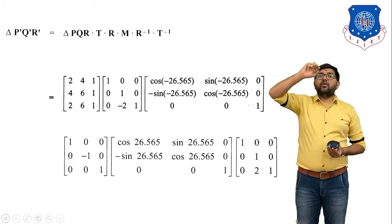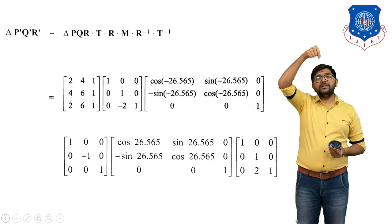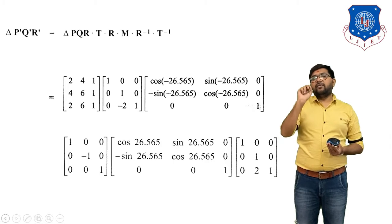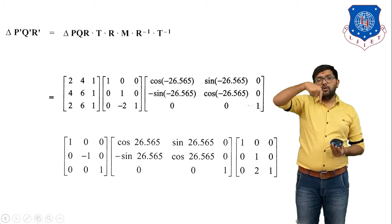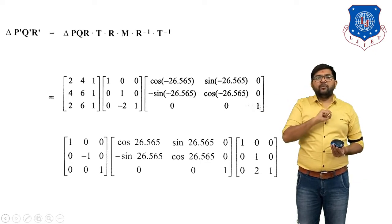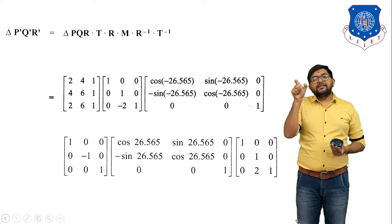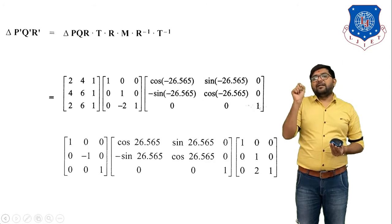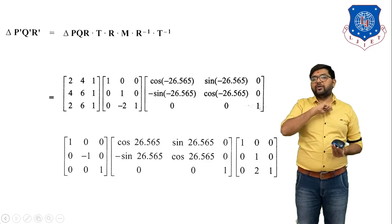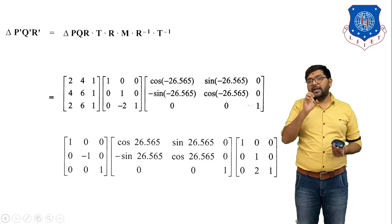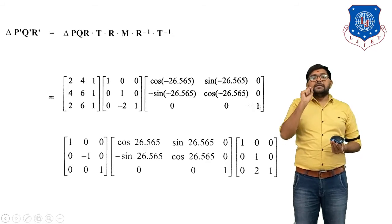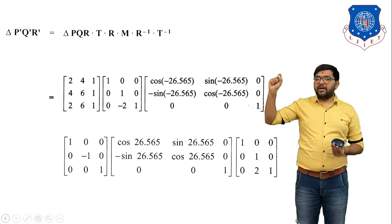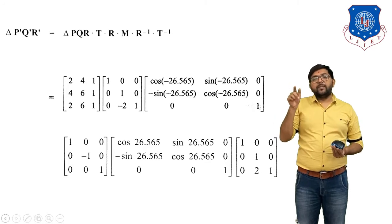For clockwise rotation, substitute −26.565° in place of θ: [cos(−26.565) −sin(−26.565) 0 / sin(−26.565) cos(−26.565) 0 / 0 0 1]. Next, M — the mirror about the x-axis matrix: [1 0 0 / 0 −1 0 / 0 0 1]. For anticlockwise rotation R⁻¹, put θ = 26.56°: [cos(26.56) sin(26.56) 0 / −sin(26.56) cos(26.56) 0 / 0 0 1]. For inverse translation, Ty = +2 and Tx = 0: [1 0 0 / 0 1 0 / 0 2 1].